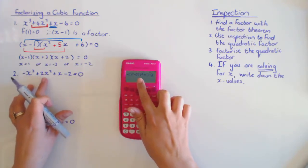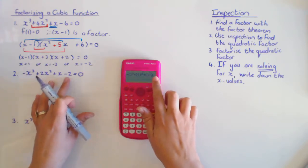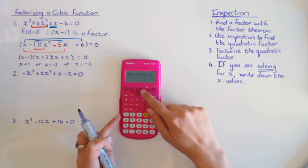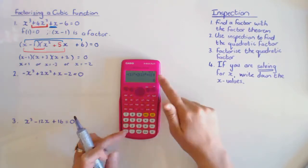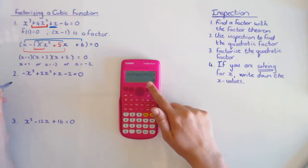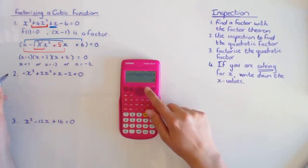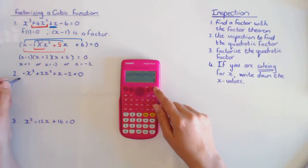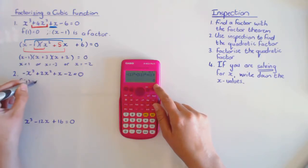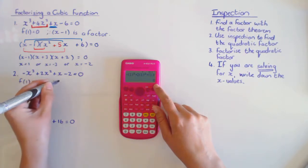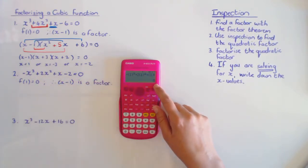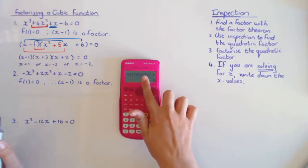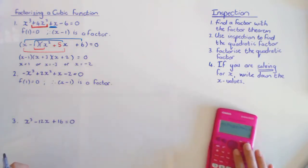For the second example, I put brackets in place of x: negative x cubed plus two x squared plus x minus two. I substitute 1 into the equation and it gives me zero. It does not always work like this — sometimes you have to try 1, minus 1, 2, minus 2, and so on until you find something that works. f(1) equals zero, which means x minus one is a factor. You must always write this step.